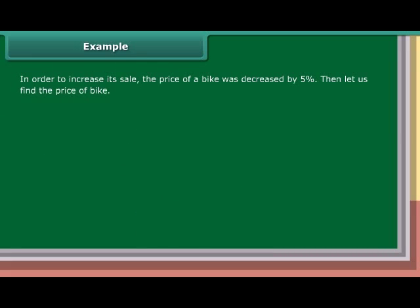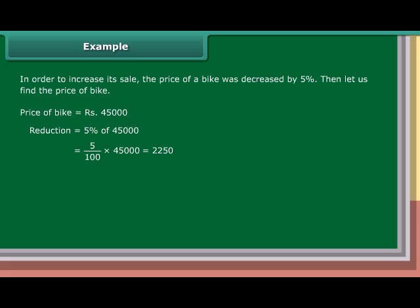In order to increase its sale, the price of a bike was decreased by 5%. Price of bike = Rs. 45,000. Reduction = 5/100 × Rs. 45,000 = Rs. 2,250. New price = Rs. 45,000 − Rs. 2,250 = Rs. 42,750.